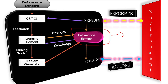The second component is the learning element. The learning element uses feedback from the critic on how the agent is doing, and it determines how the performance element should be modified to do better in the future. The design of the learning element depends very much on the design of the performance element.